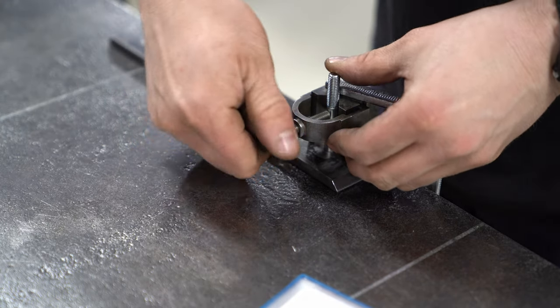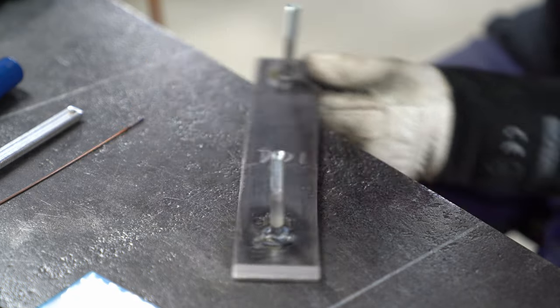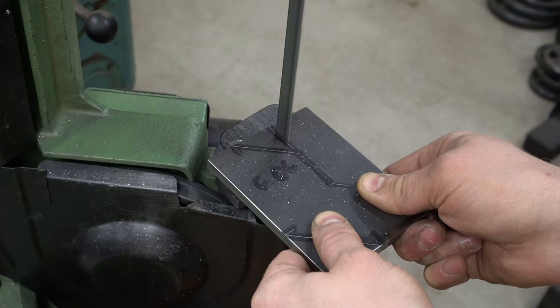There are some studs that get welded onto the platen face. And those are checked for square and then we're onto the table holder frame.